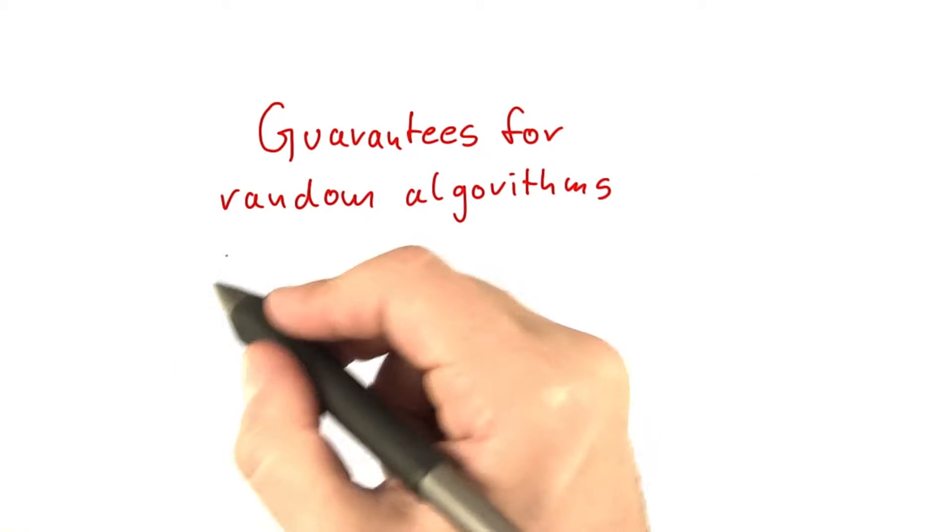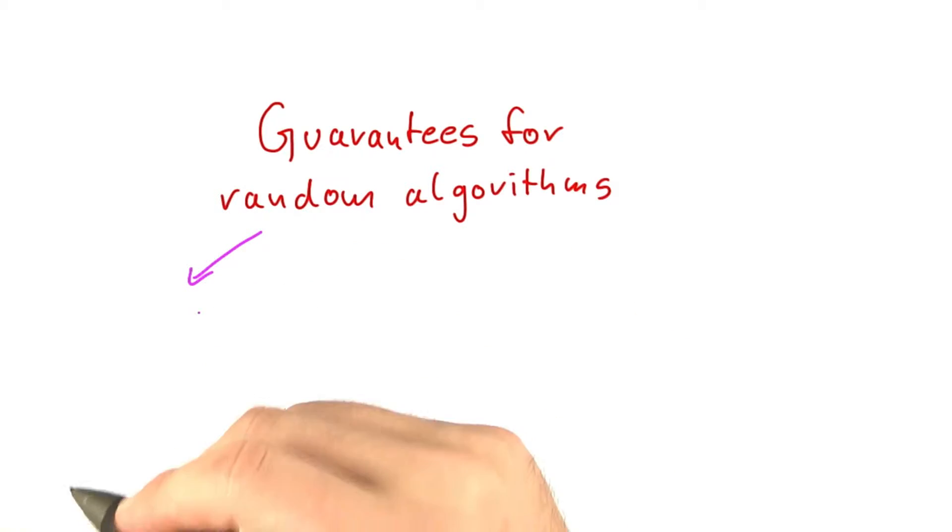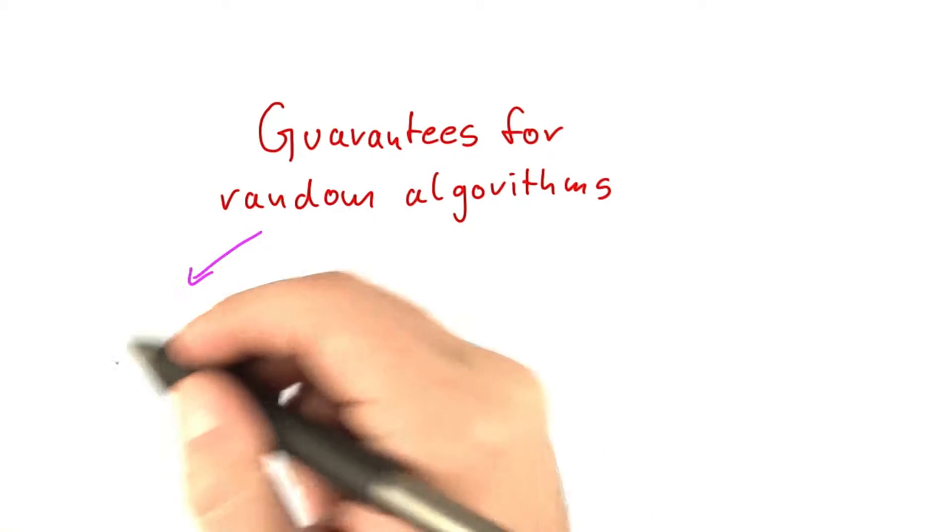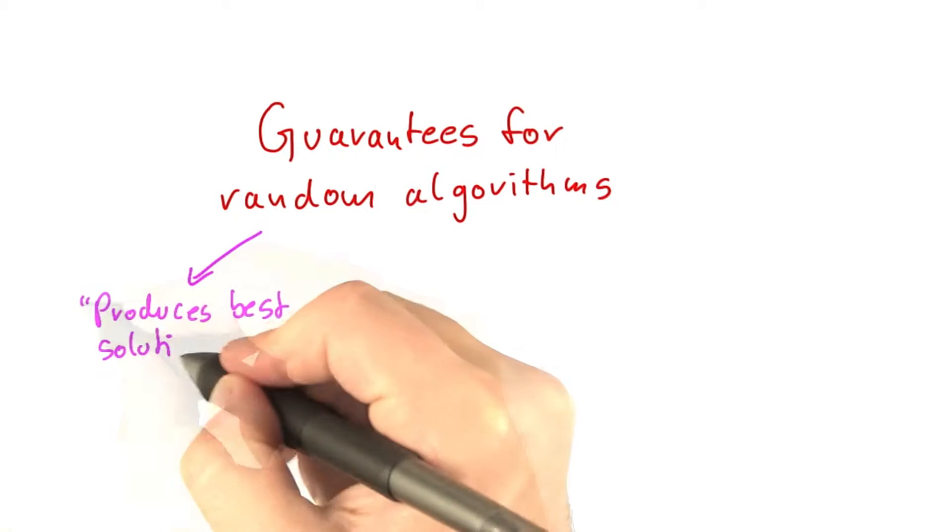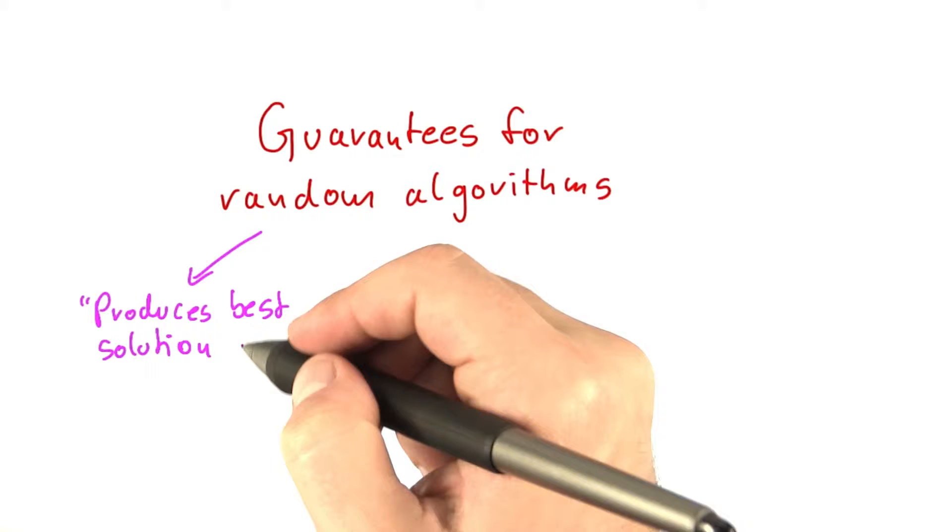So one way we could demand a guarantee from a random algorithm is that we say it produces the correct or best possible solution with a certain probability. So best would be in the case of optimization problems, and correct of course in the case of decision problems.